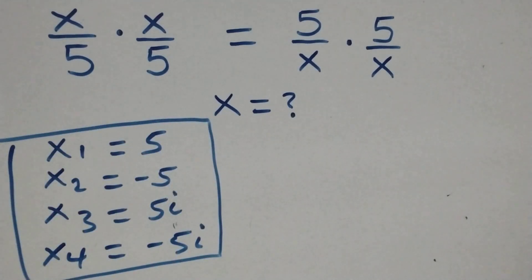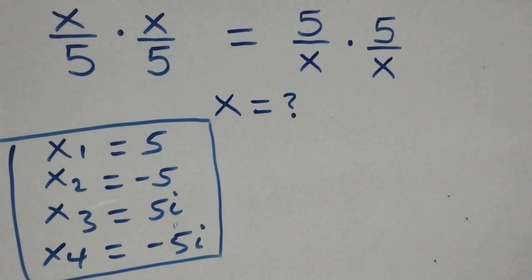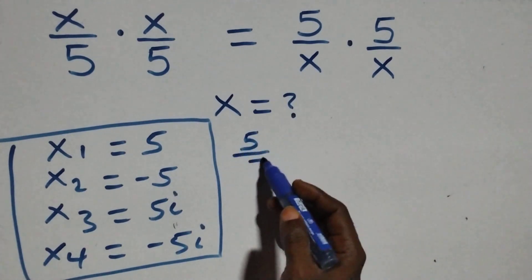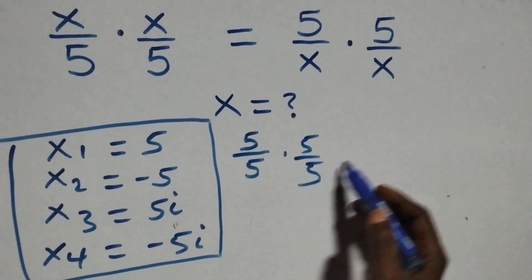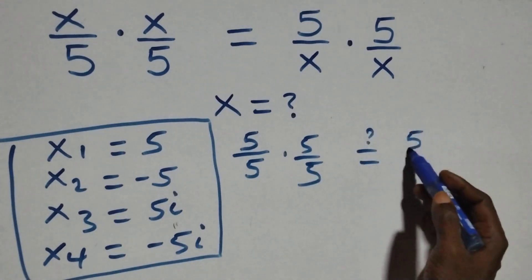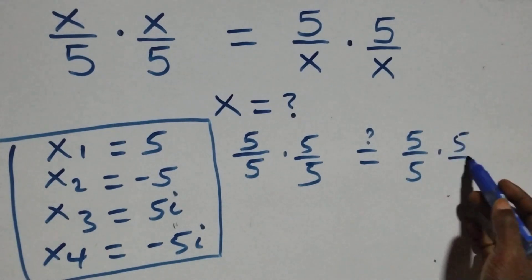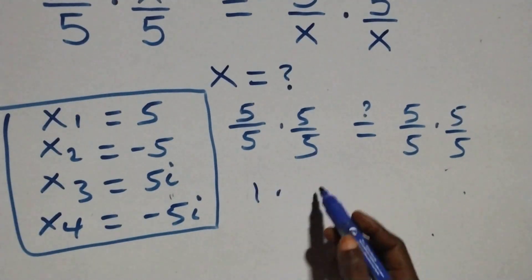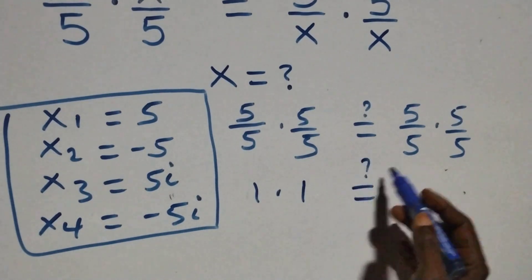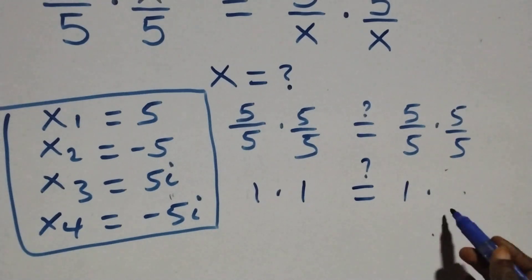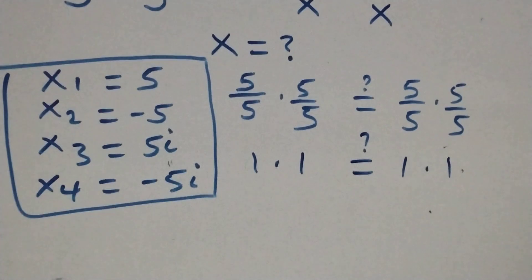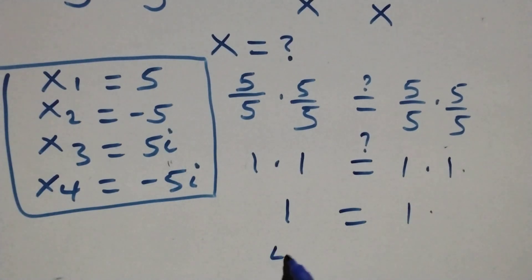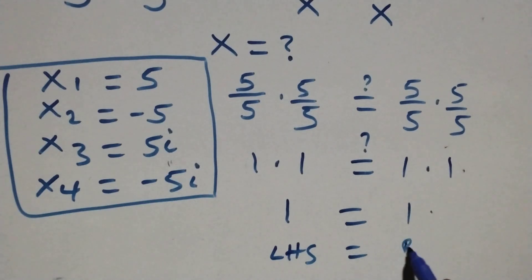When we check by substituting x equals 5 into the given problem, the equation becomes 5 over 5 times 5 over 5, equals 5 over 5 times 5 over 5. Then 5 over 5 is 1, times also 5 over 5 is 1, which equals 1. So left hand side equals right hand side.